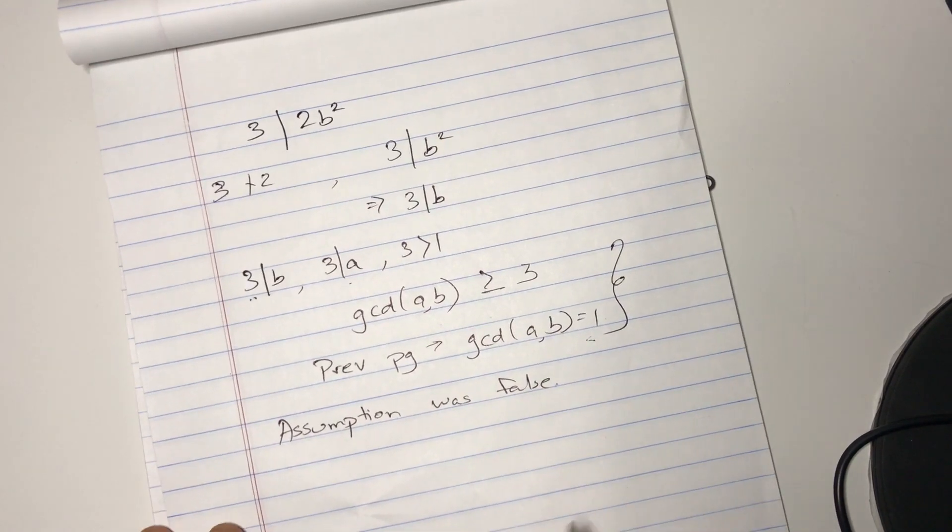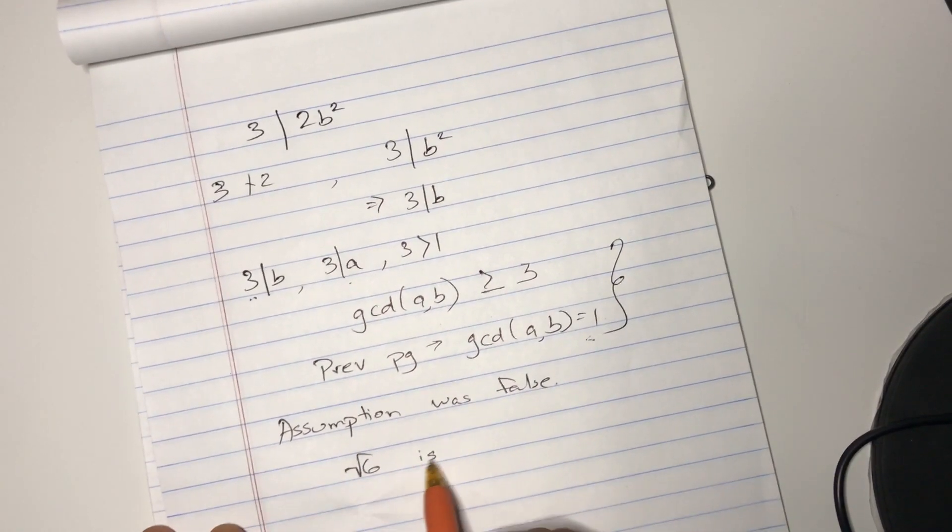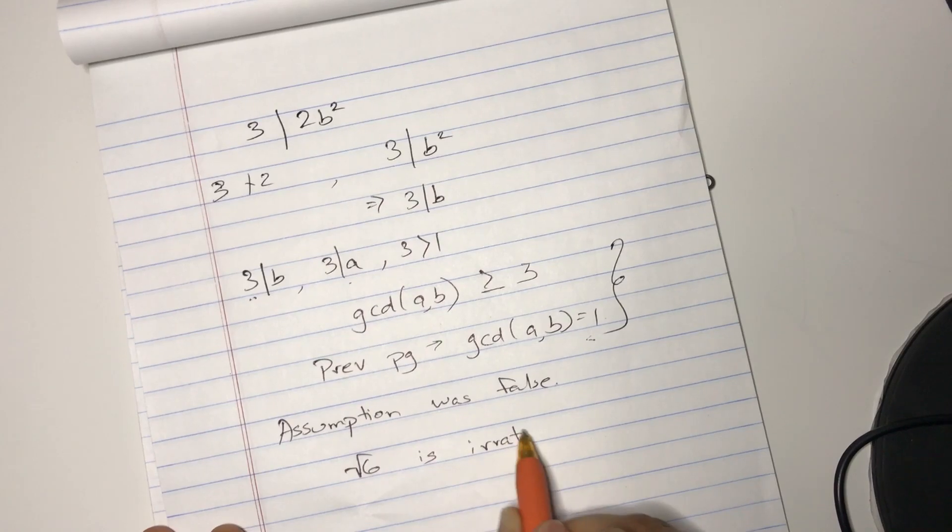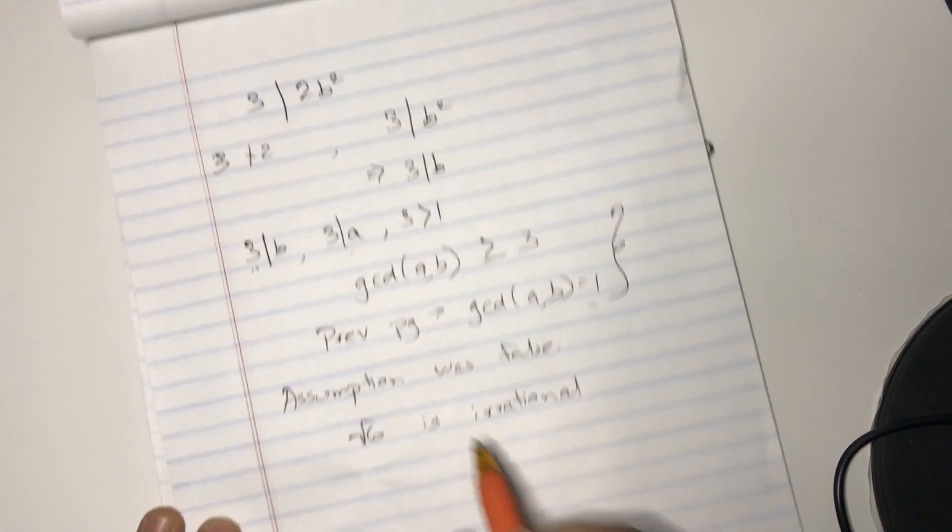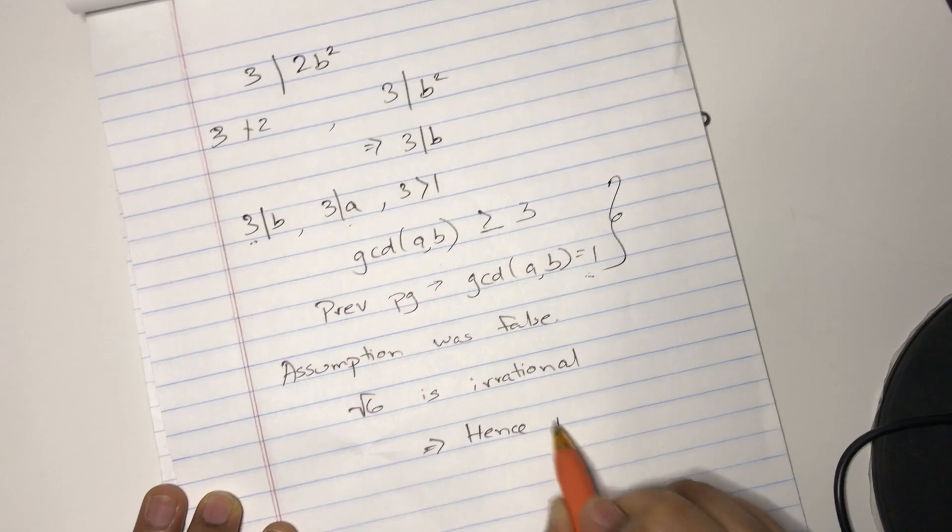That means square root of 6 is irrational. Hence proved.